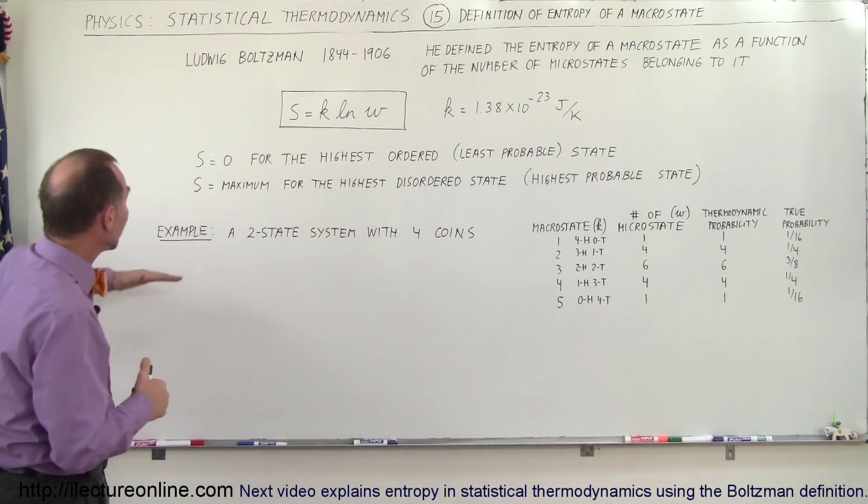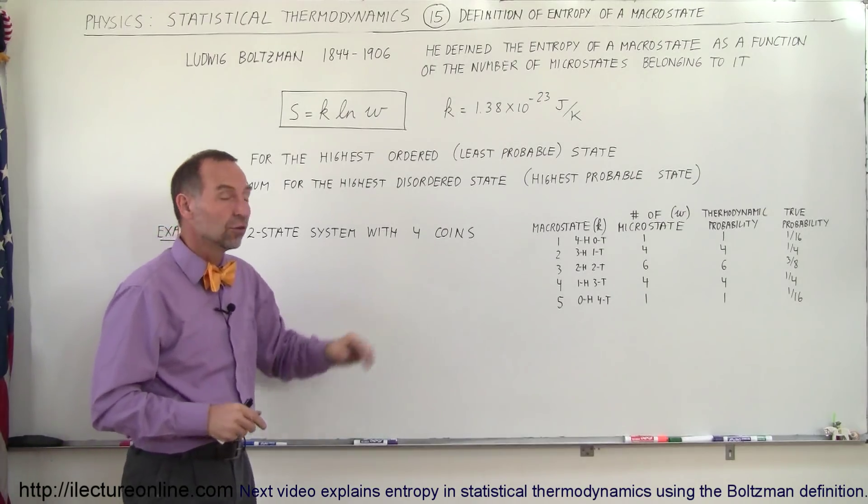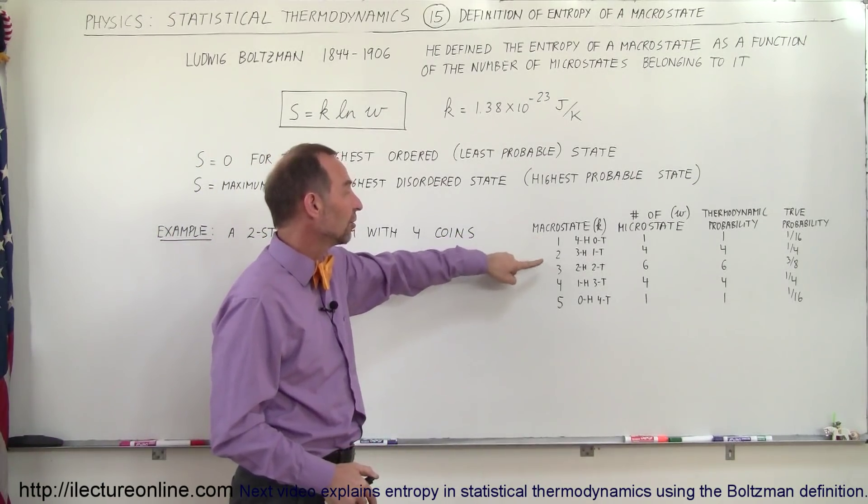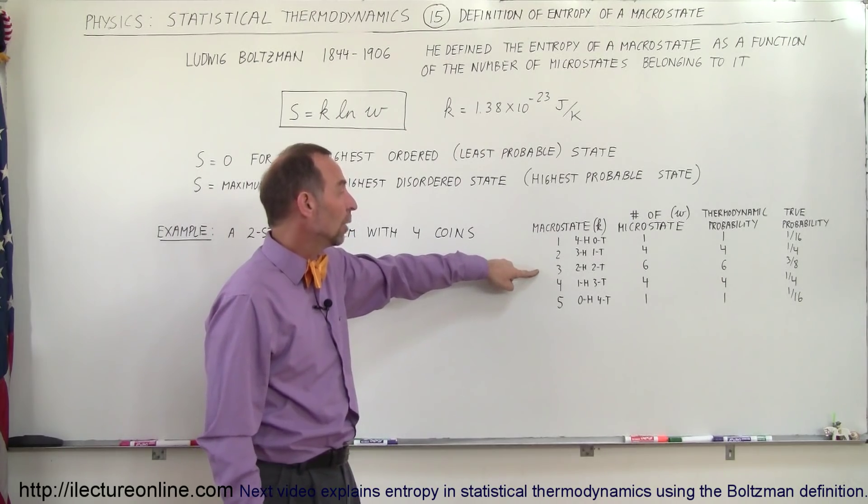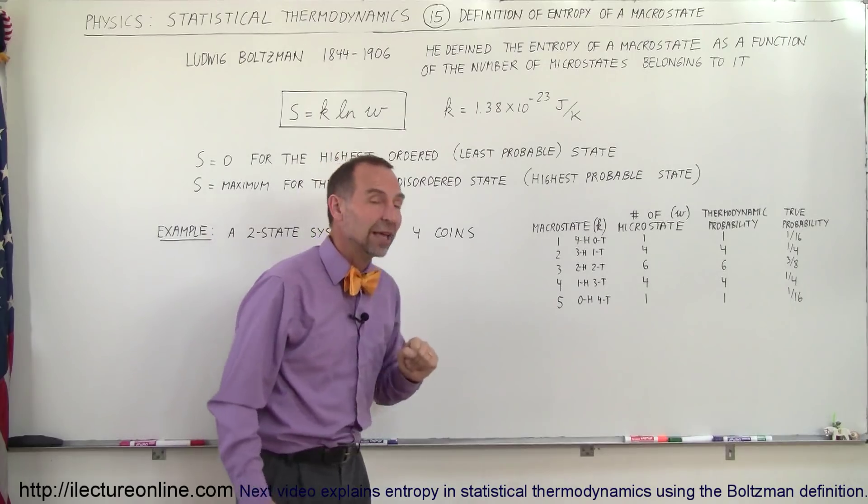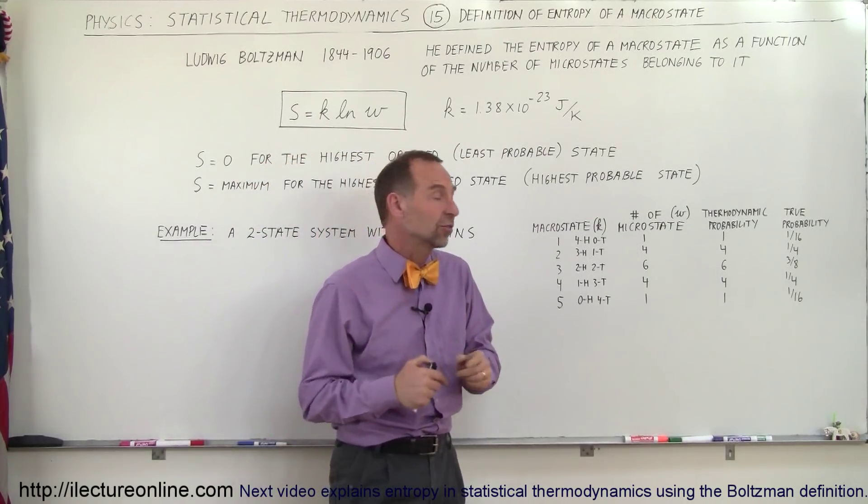So when we do a simple example, let's say we have a two state system, heads and tails with four coins. So there'll be five macrostates where you can have four heads, zero tails, three heads, one tail, two heads, two tails, one head, three tails, or zero heads and four tails.